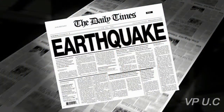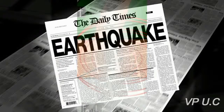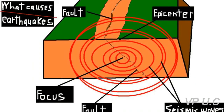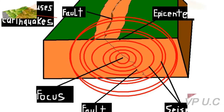An earthquake, also known as a quake, tremor, or temblor, is the perceptible shaking of the surface of the Earth, resulting from the sudden release of energy in the Earth's crust that creates seismic waves. Earthquakes can be violent enough to toss people around and destroy whole cities.